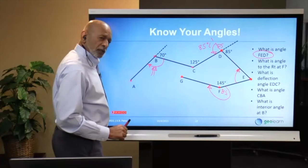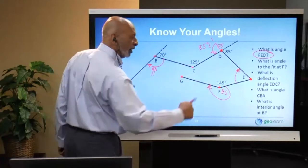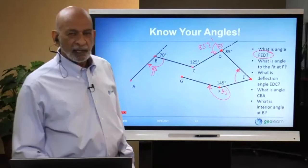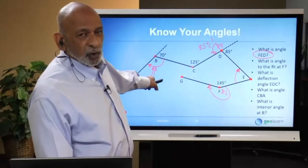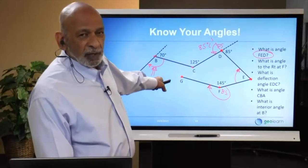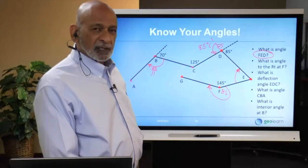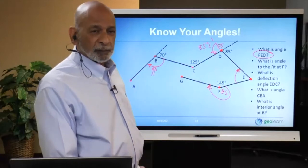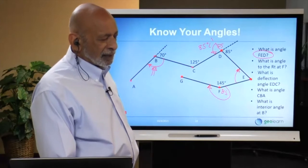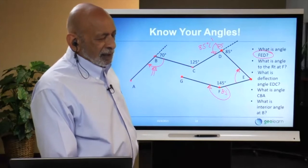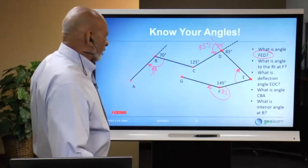What is the interior angle at B? That's a trick question — this is an open traverse, so there is no interior angle. On an exam, you would pick 'none of the above.' This could easily appear on an exam.